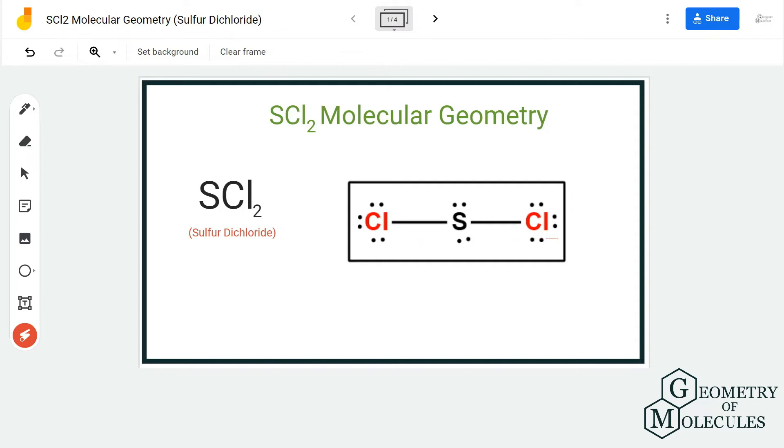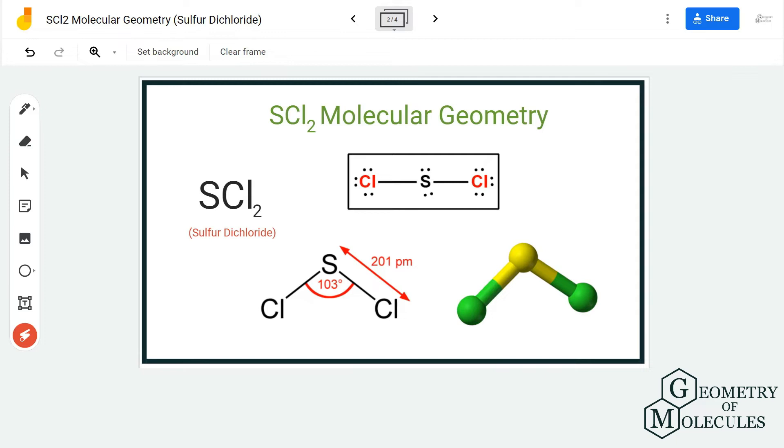If you look at it in 3D, you can see that these two lone pairs of electrons on the sulfur atom cause repulsive forces which force down the chlorine atoms to shift away from the linear position.